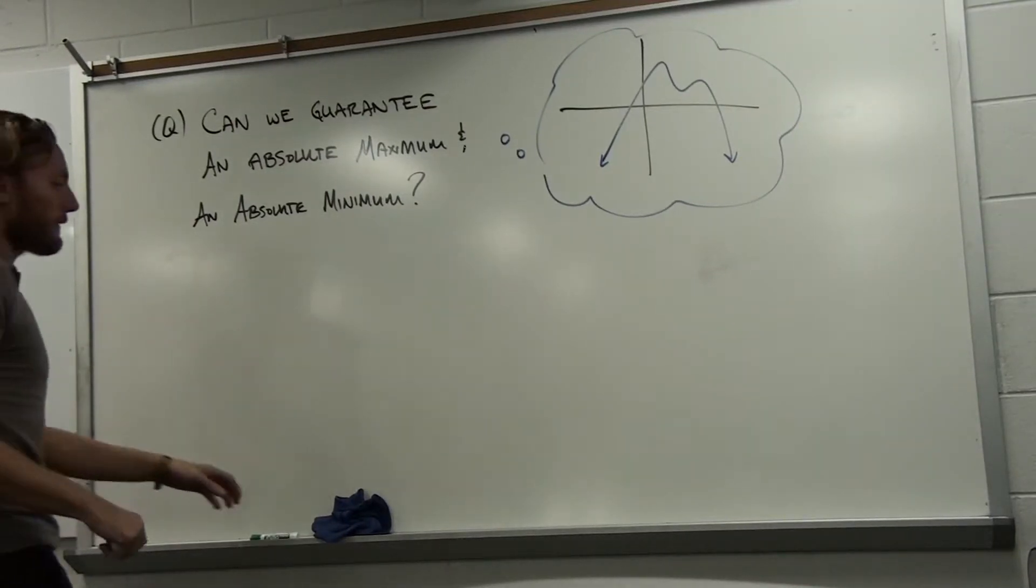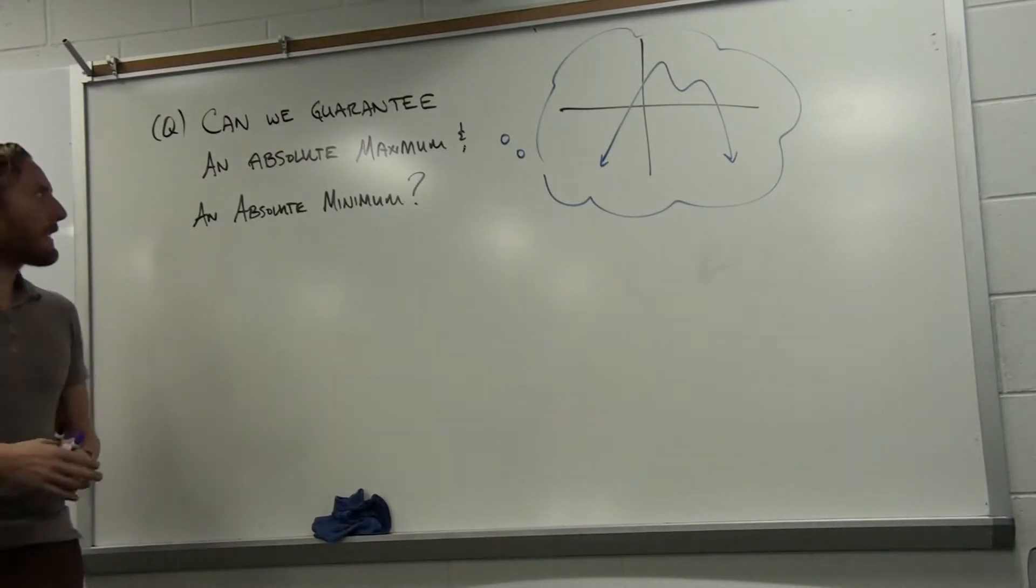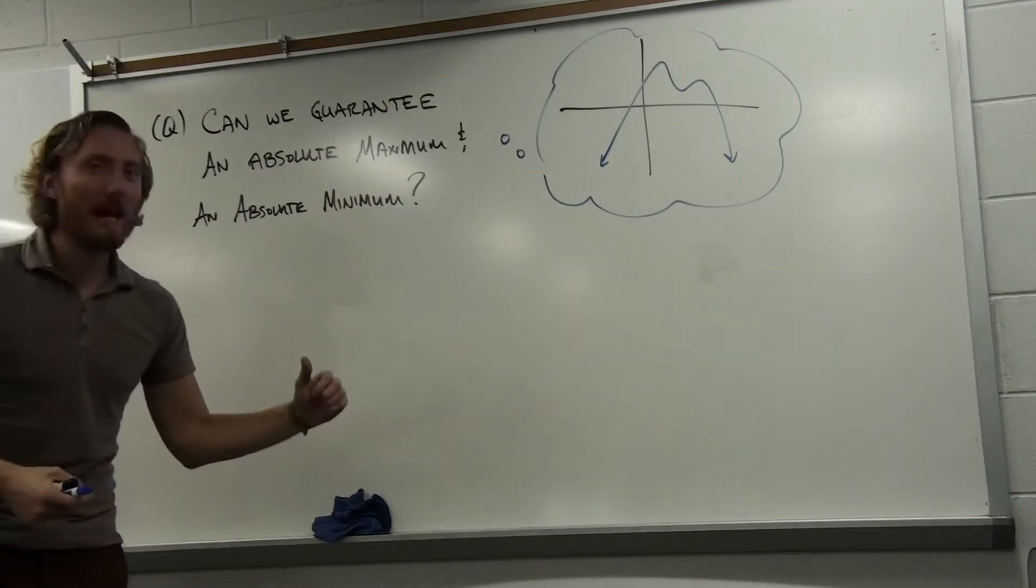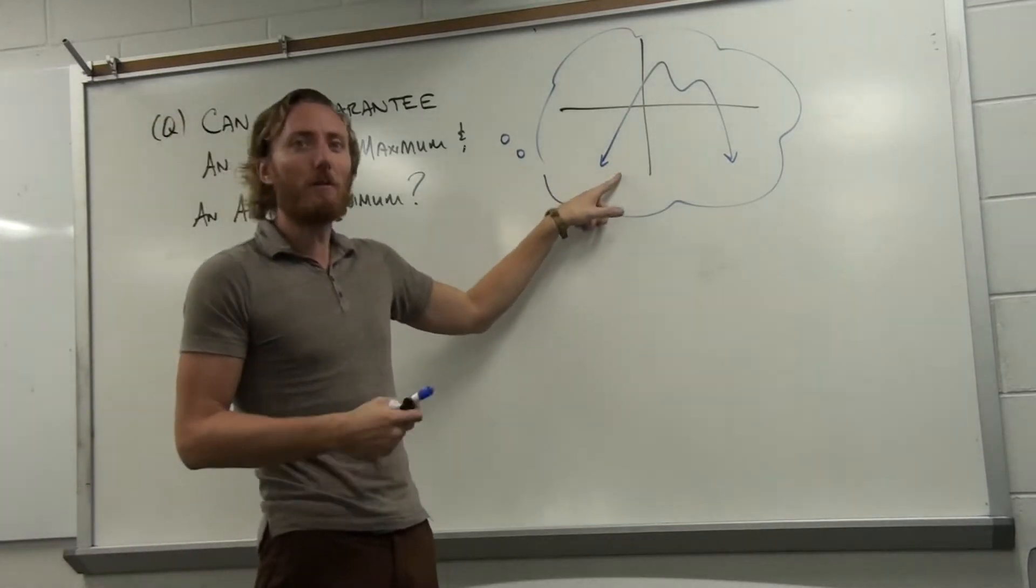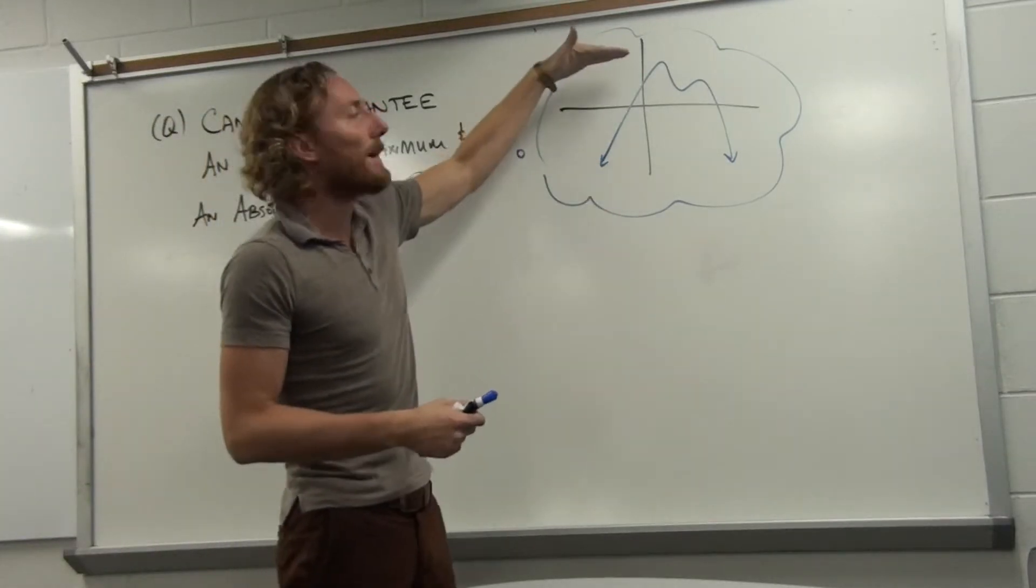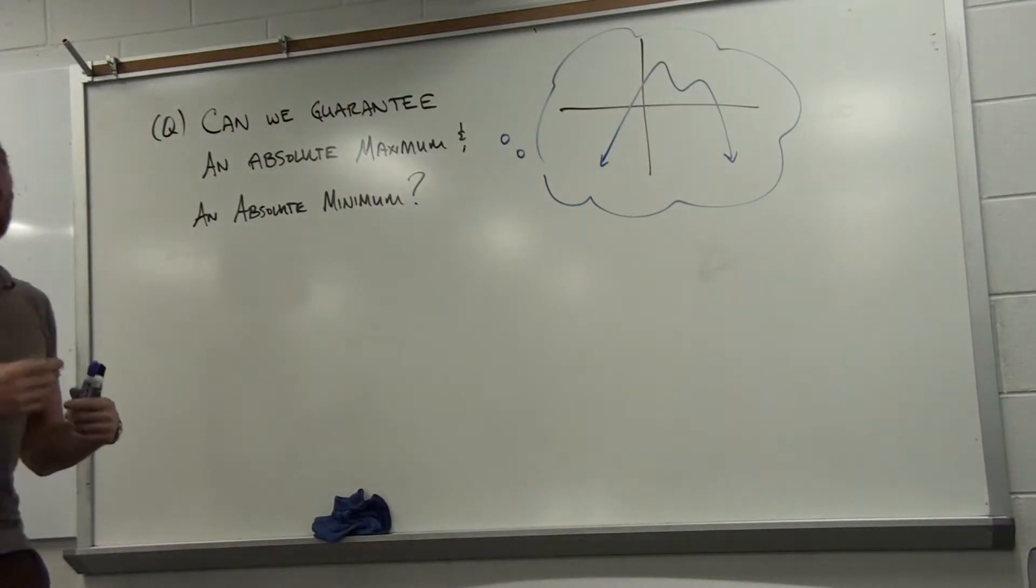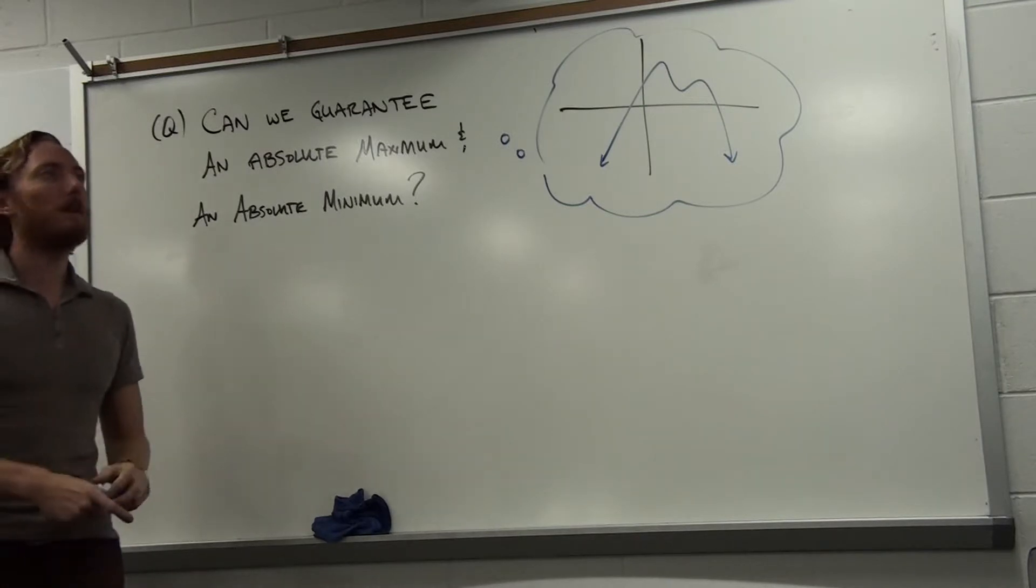Here's a question we can ask ourselves: can we guarantee an absolute maximum and an absolute minimum for a function? This would be a function that has both. Here's the deal - the function we looked at before has an absolute maximum but doesn't have an absolute minimum. So maybe rather than saying can we guarantee, what can we do to guarantee that?